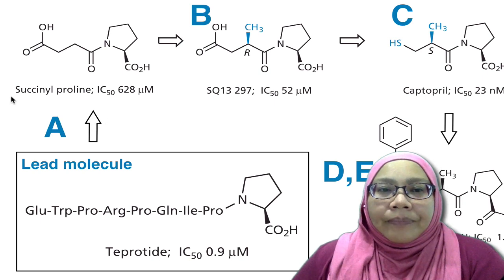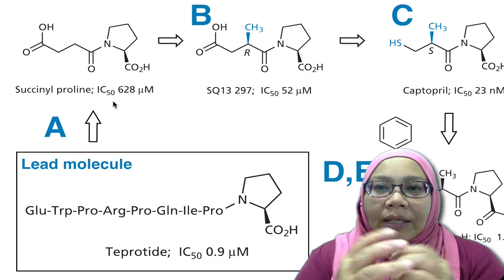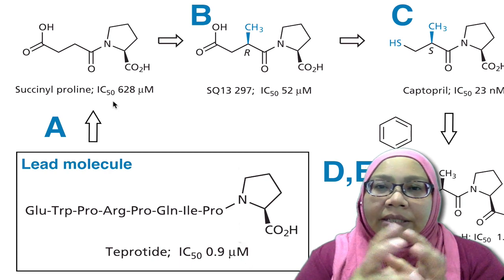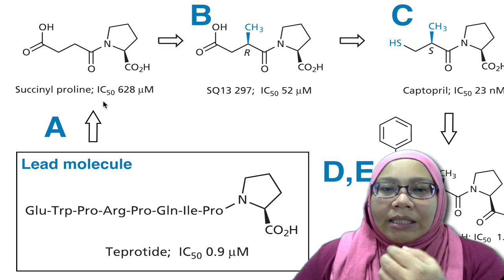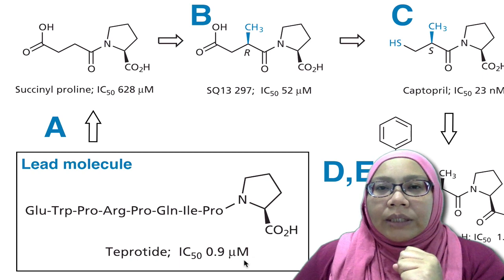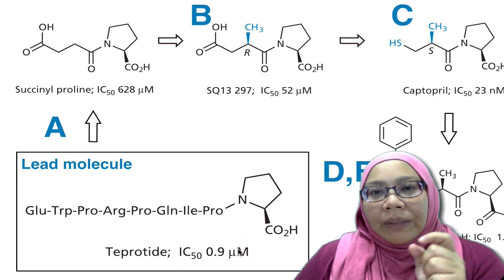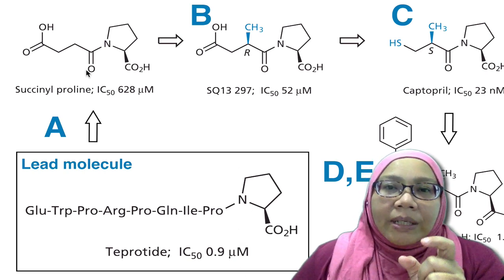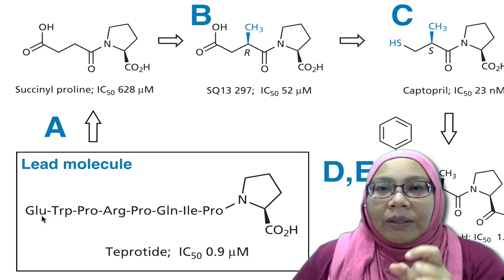From this lead molecule, on further development, the researchers actually managed to get succinylproline. This succinylproline is actually amino acids. The IC50 is about 628 micromolar, which in one sense is worse than the lead molecule tripeptide. But the good thing — the improvement here — is that succinylproline is much simpler and easier to synthesize compared to the nine amino acid peptide.